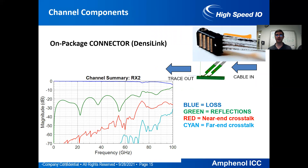The on-package Densalink is very similar, except it goes directly to the surface of the package with no other components — just directly down onto it. The on-package structure shows lower crosstalk than the surface mount structure and slightly lower loss. Reflections are nice and low, below minus 10 dB all the way out to 90 GHz in simulation. This is another reason the on-package structure is favorable for 224 channels.